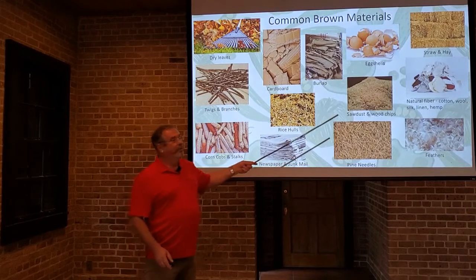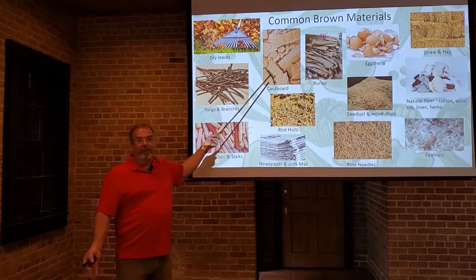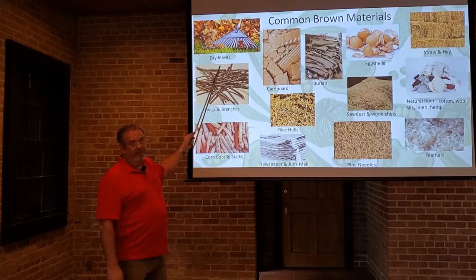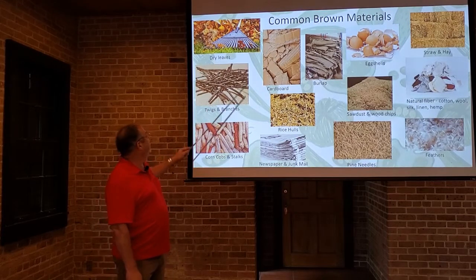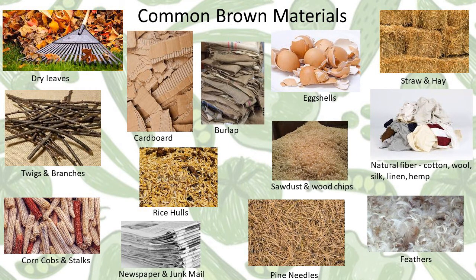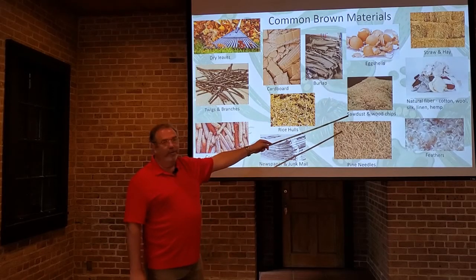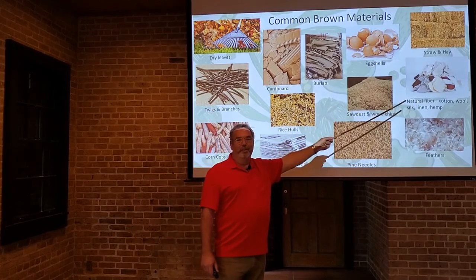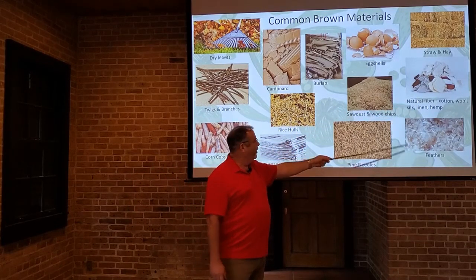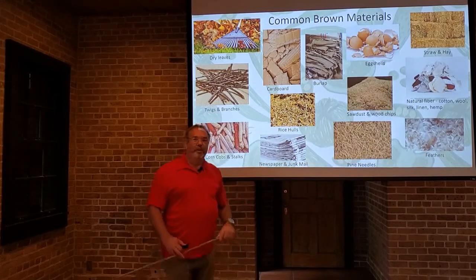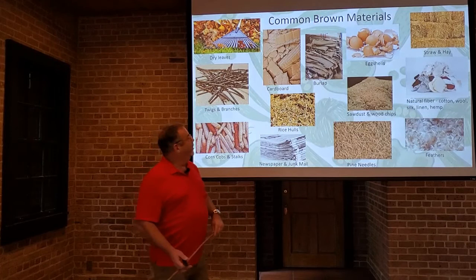Some examples of brown materials: dry leaves — it's fall right now so there's lots of opportunity to collect them. Twigs and branches can be good, but you often want to prepare and break them up. Corn cobs and stalks, newspaper and junk mail — I put all my junk mail in my compost pile. Rice hulls, cardboard, burlap, eggshells, straw and hay. Natural fibers — if you have an old cotton shirt, you can throw that in and it'll break down just fine. Feathers, pine needles, sawdust, and wood chips are all brown materials, even if they aren't literally brown.